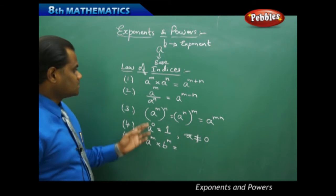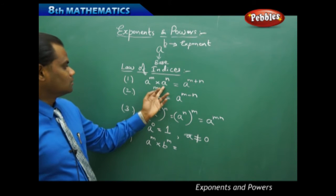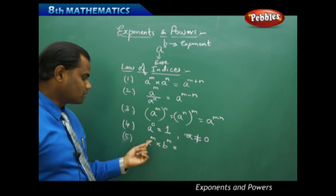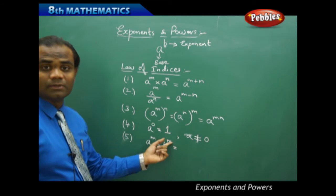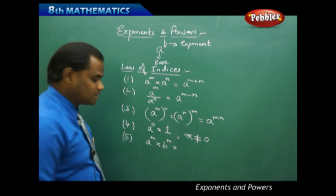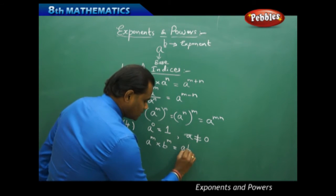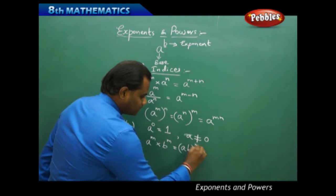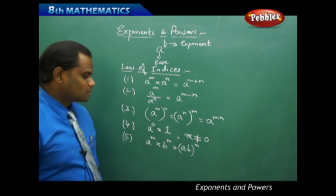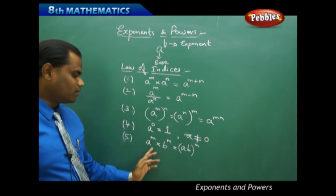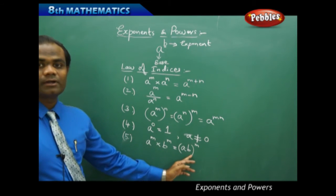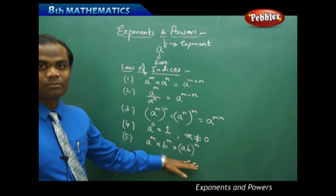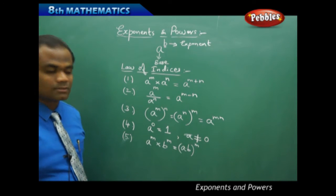The fifth law of indices applies when the bases are not equal but the powers are the same. In this case, a power m into b power m can be written as a times b, whole power m. So we can split it separately: a power m into b power m equals (ab) power m.